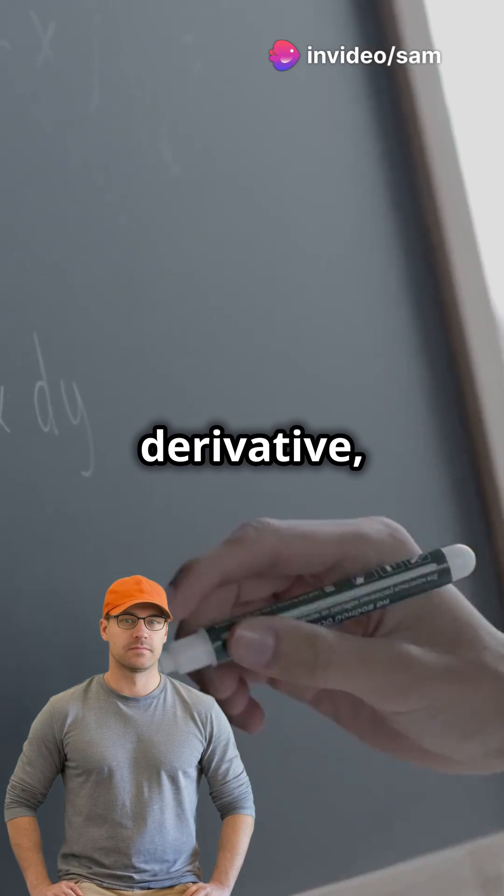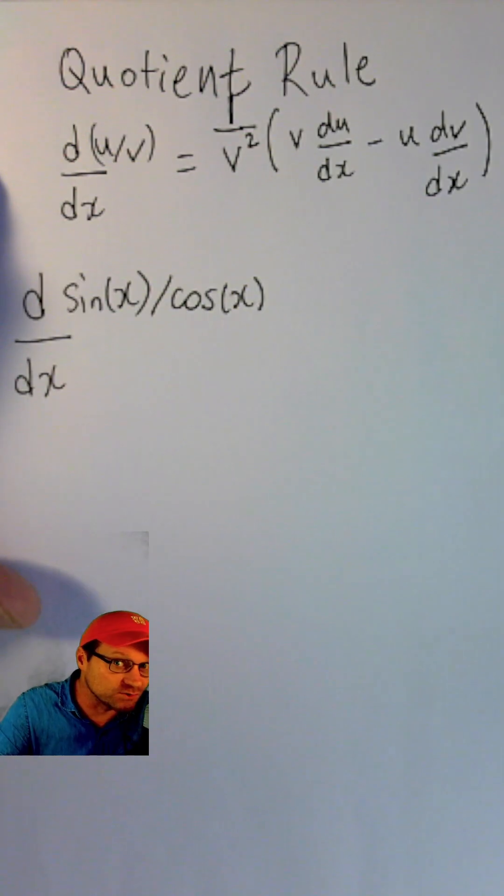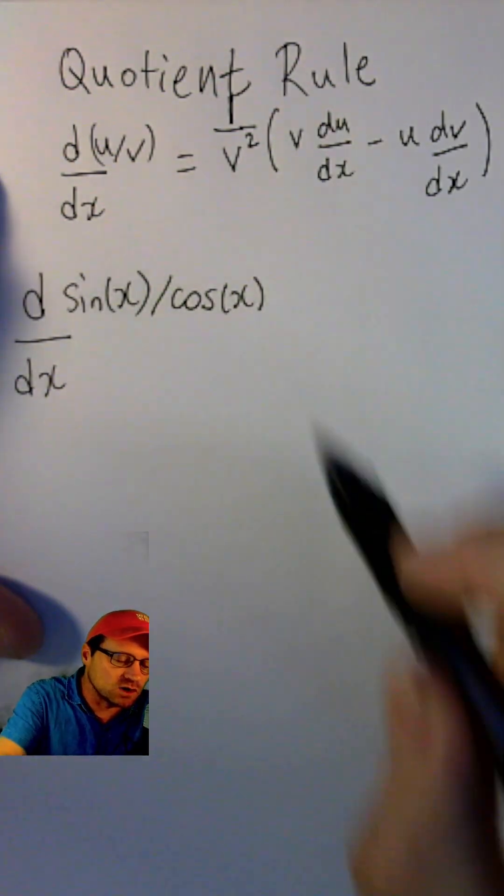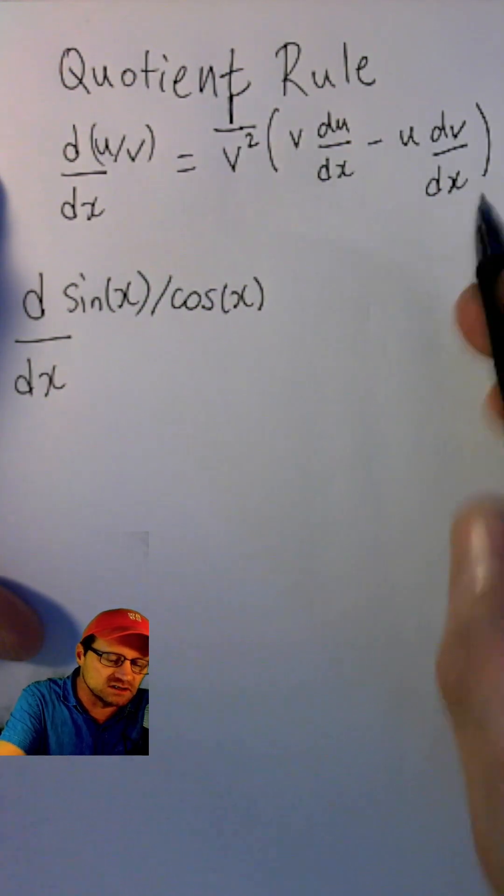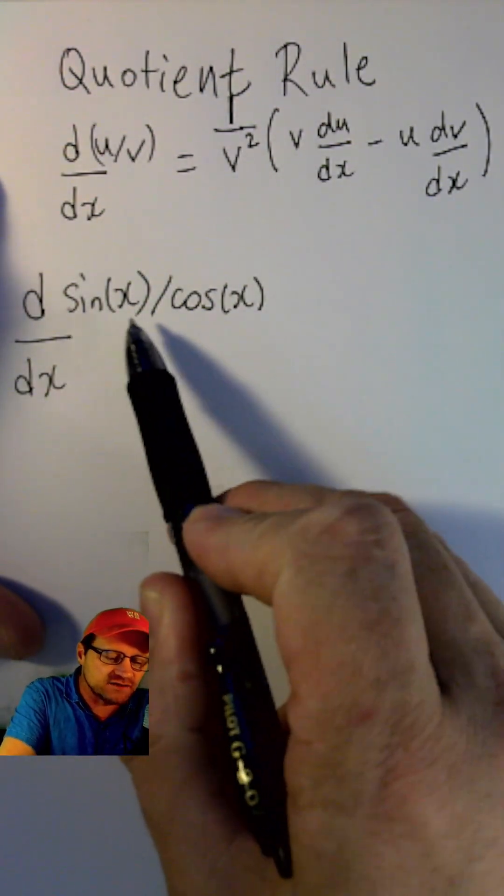To find the derivative, we need the quotient rule. The derivative of u over v is 1 over v squared times v du dx minus u dv dx. So in the case of tan x,